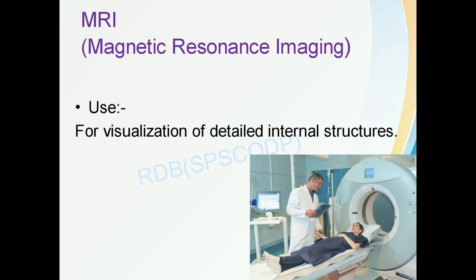The next equipment is MRI, that is Magnetic Resonance Imaging. It is used for visualization of the detailed internal structure of the body. When there is any problem or disorder in the internal structures or their functioning, MRI is used to check them.